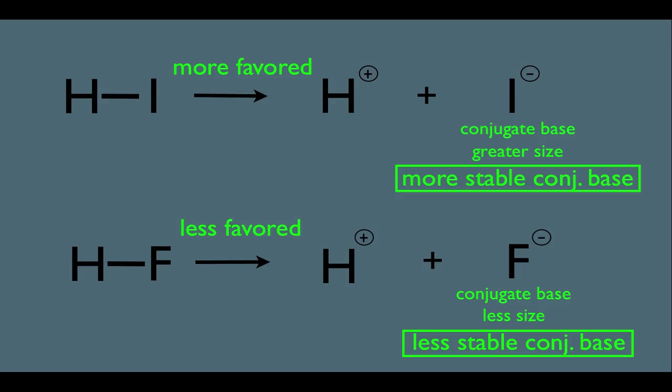Since this is the case, HI gives up its H+ more readily than HF. That makes it the stronger acid with the lower pKa.